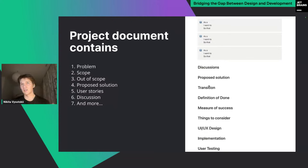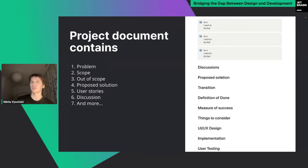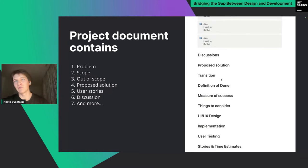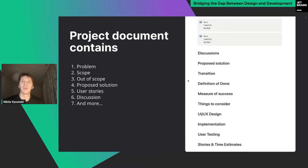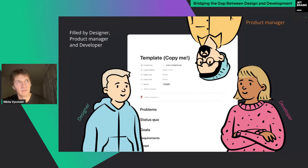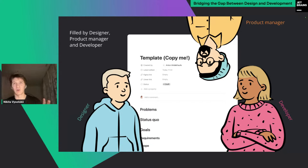Another important part is Discussions, where you define your decision-making — for example, why you chose option one rather than option two, what the pitfalls were. The last and biggest part is Proposed Solution where you explain all the design decisions. The document is collaborative work involving the product manager, developer or tech lead, and you as a designer. The level of contribution depends on your processes and team.